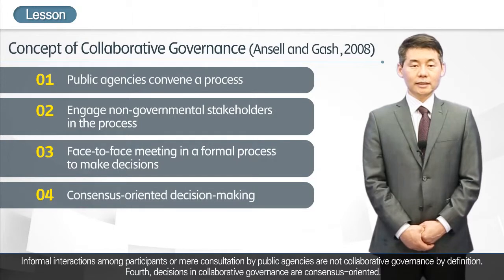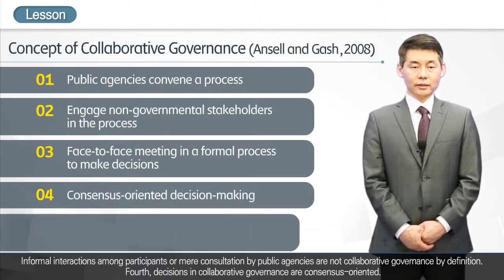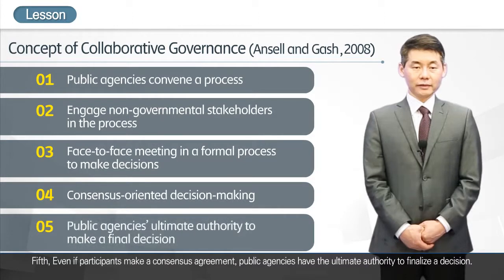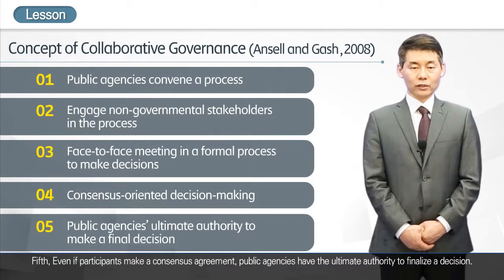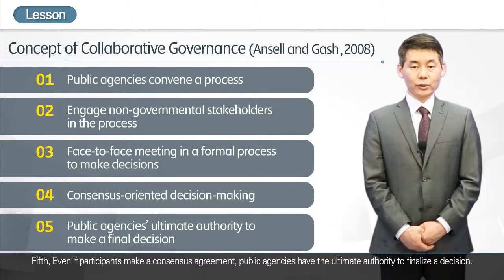Fourth, decisions in collaborative governance are consensus-oriented. Fifth, even if participants make a consensus agreement, public agencies have the ultimate authority to finalize a decision.